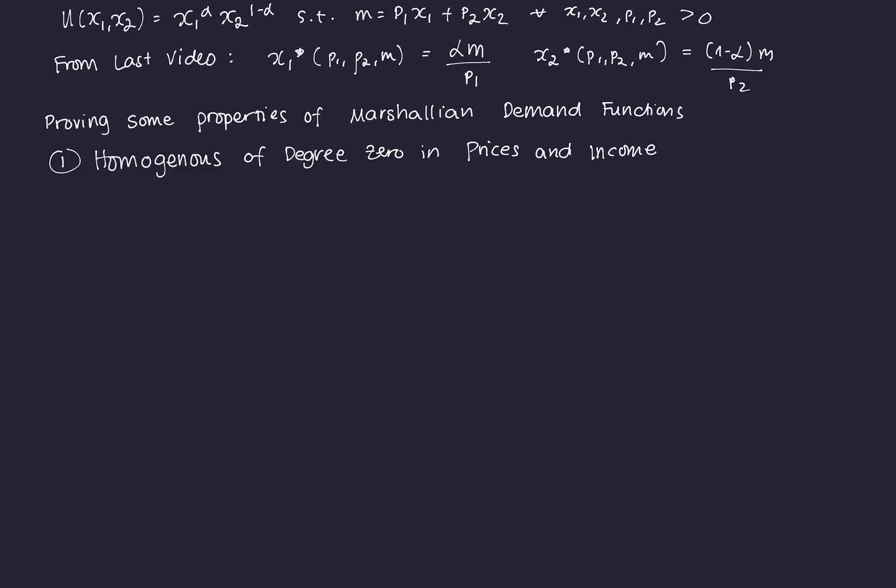Hi everyone. In this video, we're going to move with our example on the theory of consumer behavior in the utility maximization process. In the last video, what we did is we derived the Marshallian demand functions for good one and good two.